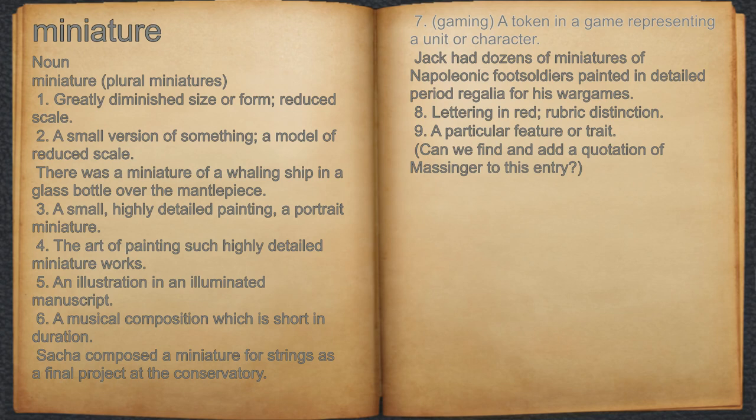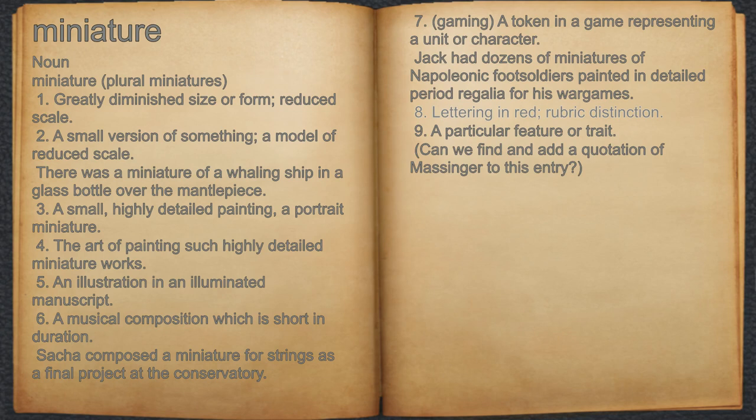7. Gaming: a token in a game representing a unit or character. For example, Jack had dozens of miniatures of Napoleonic foot soldiers painted in detailed period regalia for his war games. 8. Lettering in a red, rubric distinction.